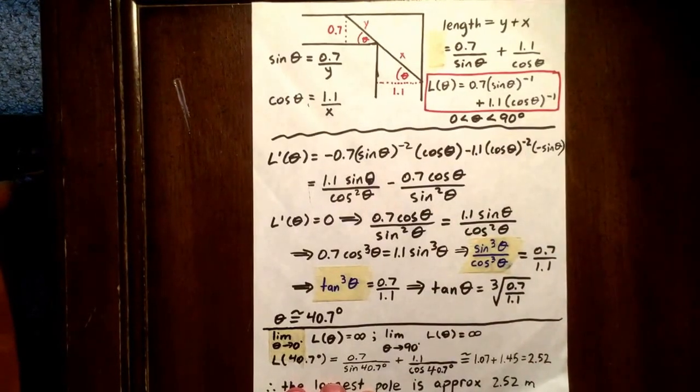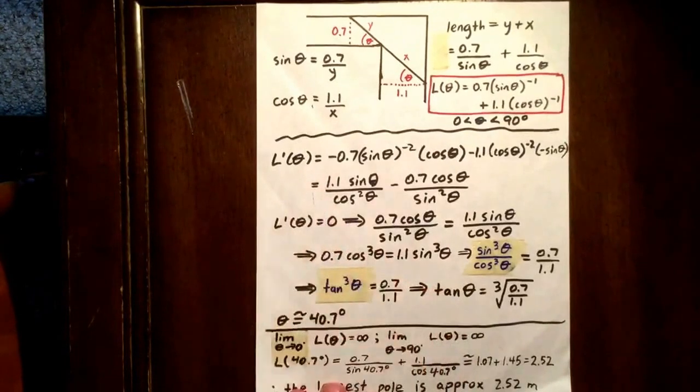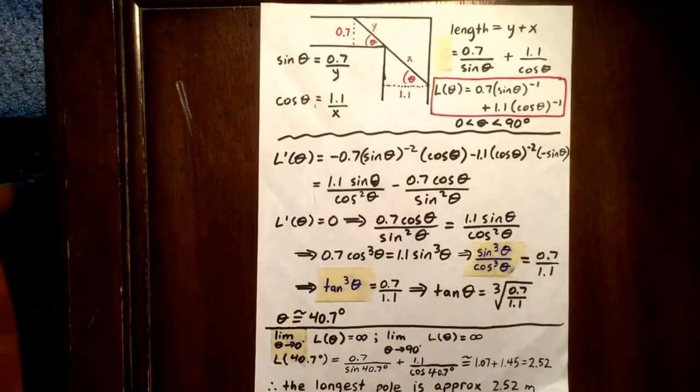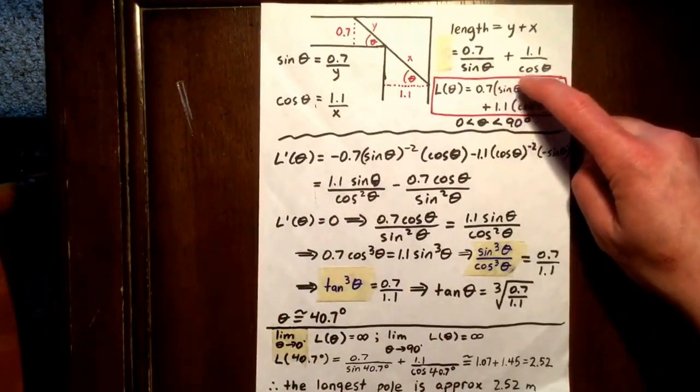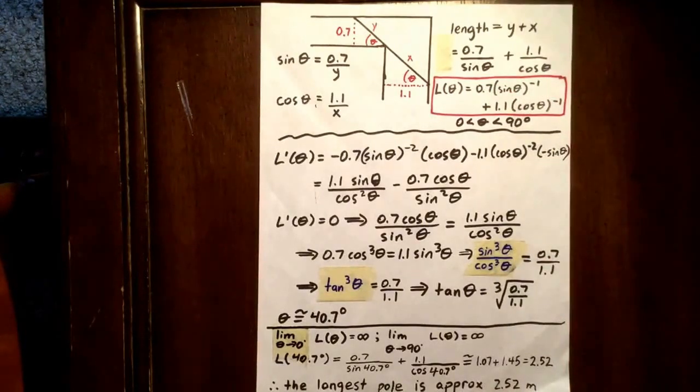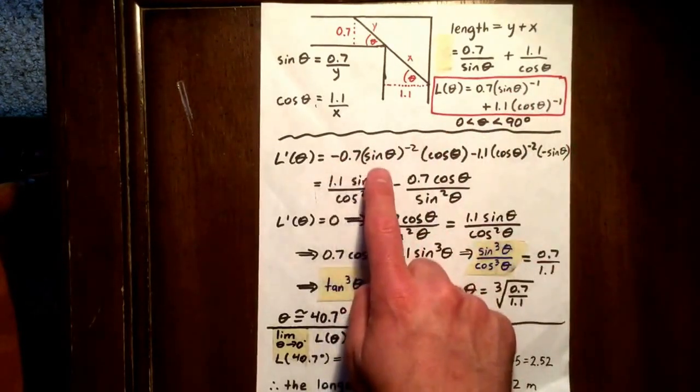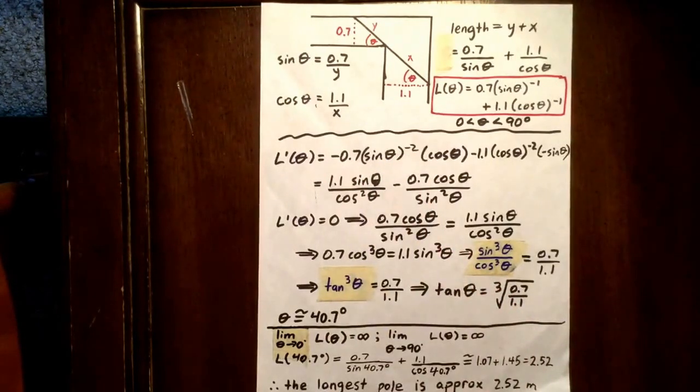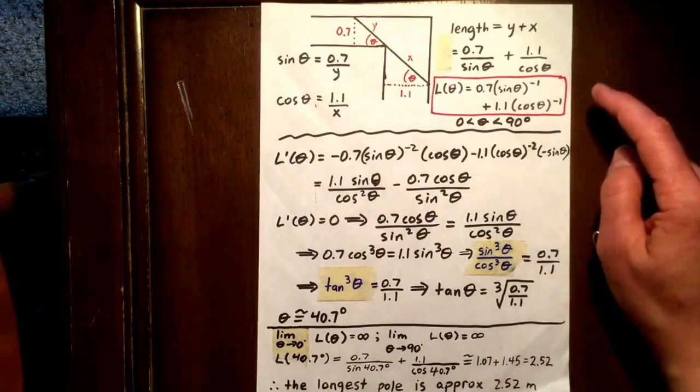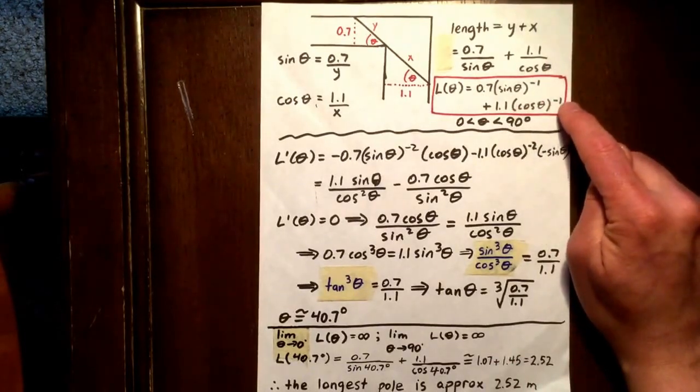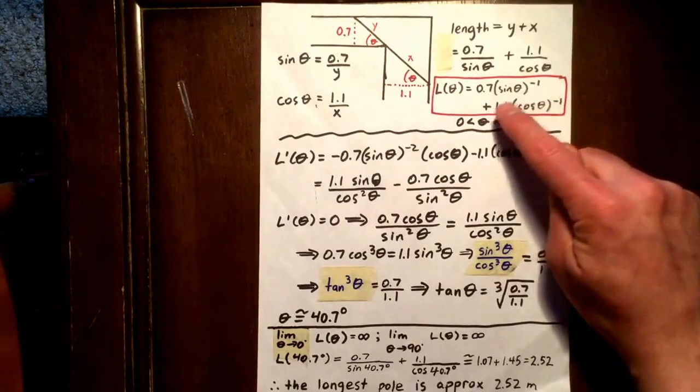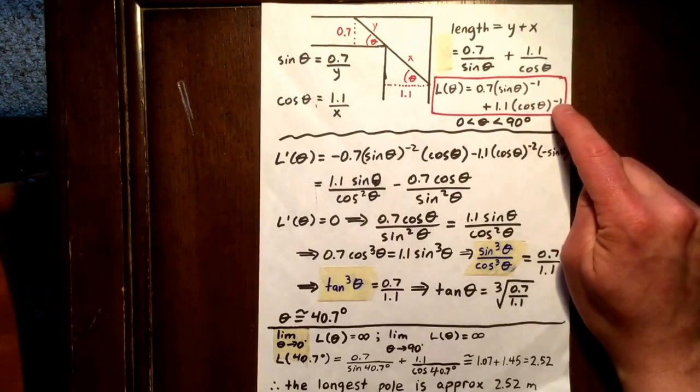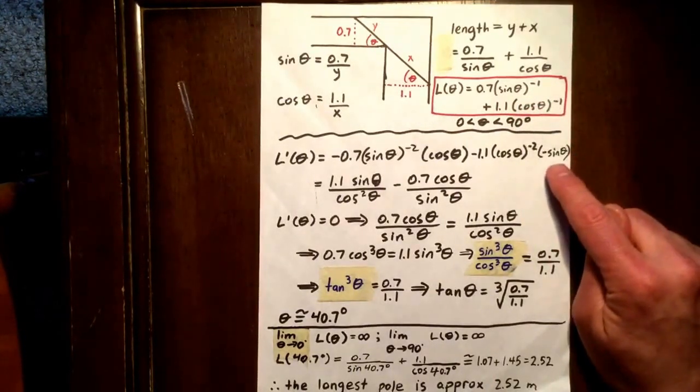What we can now do is determine the derivative. The derivative of 0.7 times sine theta to the negative 1 is negative 0.7 times sine theta to the negative 2, times the derivative of sine theta with respect to theta, which is cos theta. And then the derivative of 1.1 cos theta to the negative 1 is negative 1.1 cos theta to the negative 2 times the derivative of cos theta, which is negative sine theta.